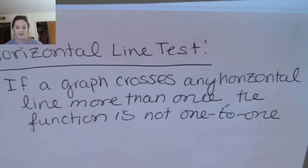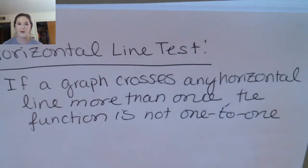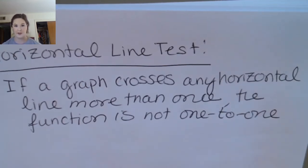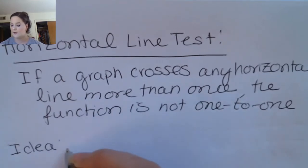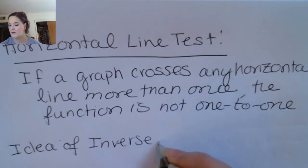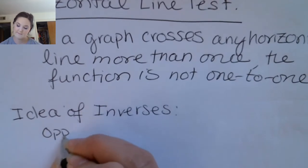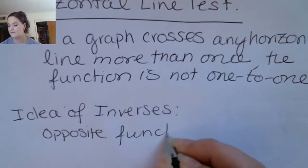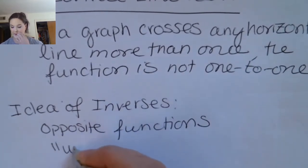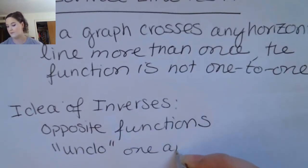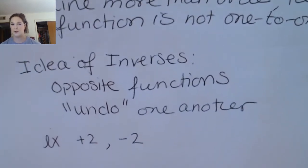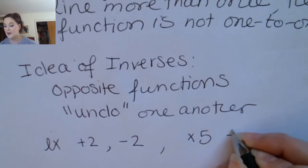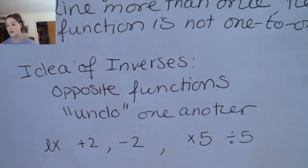Now let's talk about why we're discussing one-to-one functions when we should be talking about inverse functions. You should have seen both before, so if we went a little fast, that's why. The idea of inverses is that these are opposite functions — functions that undo one another. Examples include plus two and minus two, or times five and divide by five.